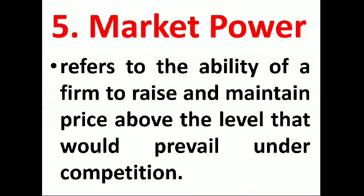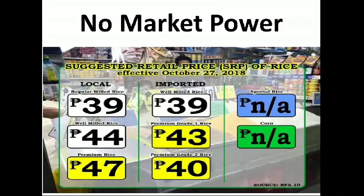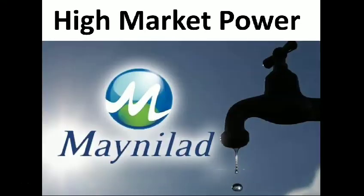Next is market power, which refers to the ability of a firm to raise and maintain price above the level that would prevail under competition. For example, the SRP (Suggested Retail Price) is mandated by the government, and markets under perfect competition are obliged to follow it. Monopoly has the highest market power and can set prices, but not to the extent of abusing their power, because the government is still regulating them.